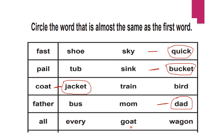Now the other word is 'all.' See here — will 'goat' come? No. 'Wagon'? No. 'Every'? Yes! All itself means every — all are invited, everyone is invited, same meaning. So all means every. We give a hyphen which indicates it's a meaning. This is our first video on synonyms — meanings — which will be very useful for Grade 1, Grade 2, Grade 3, and the little kids.